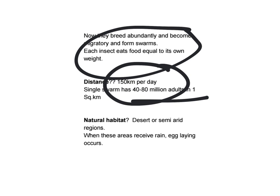Now we should understand where they are naturally found — their natural habitat. They are found in desert or semi-arid regions, and when these areas receive rainfall, egg-laying occurs and the entire life cycle of the insect continues.